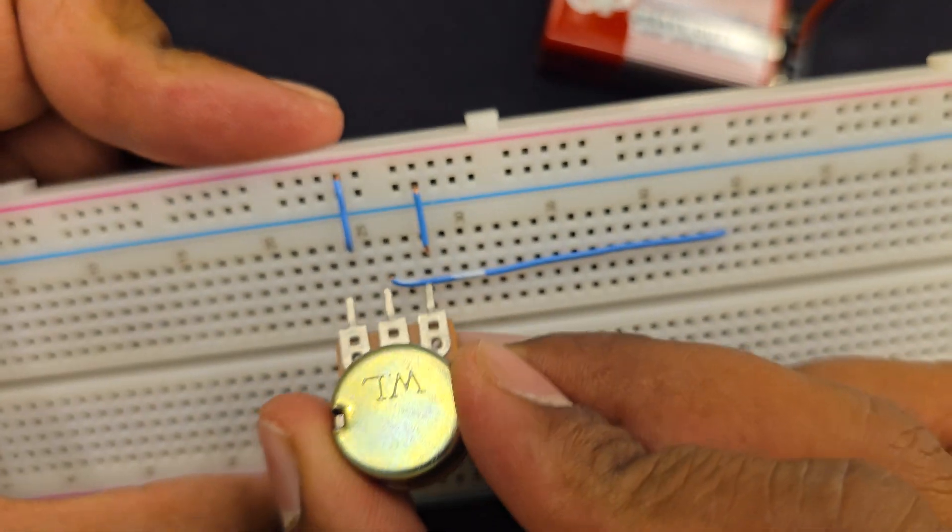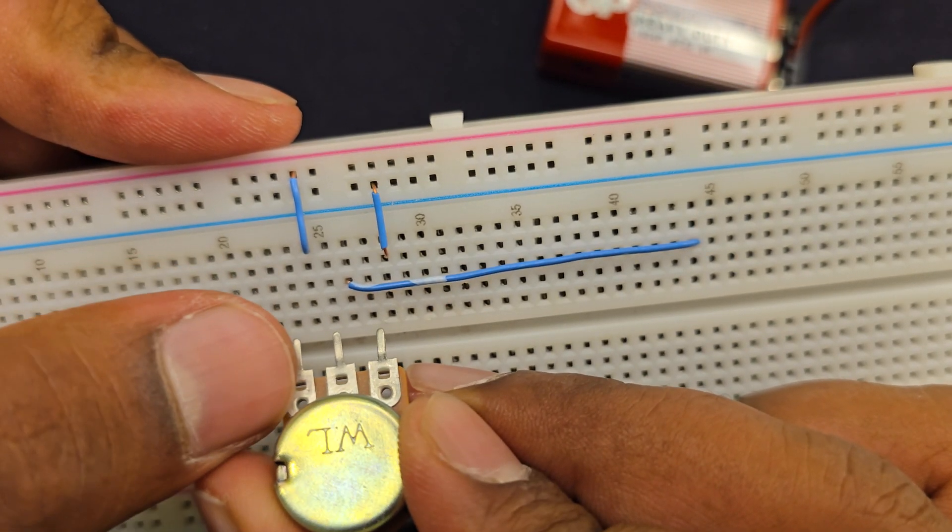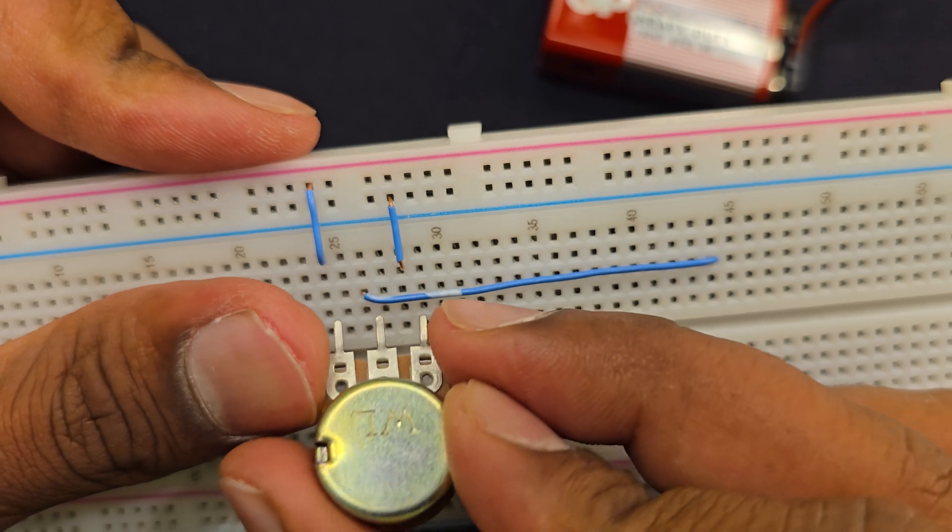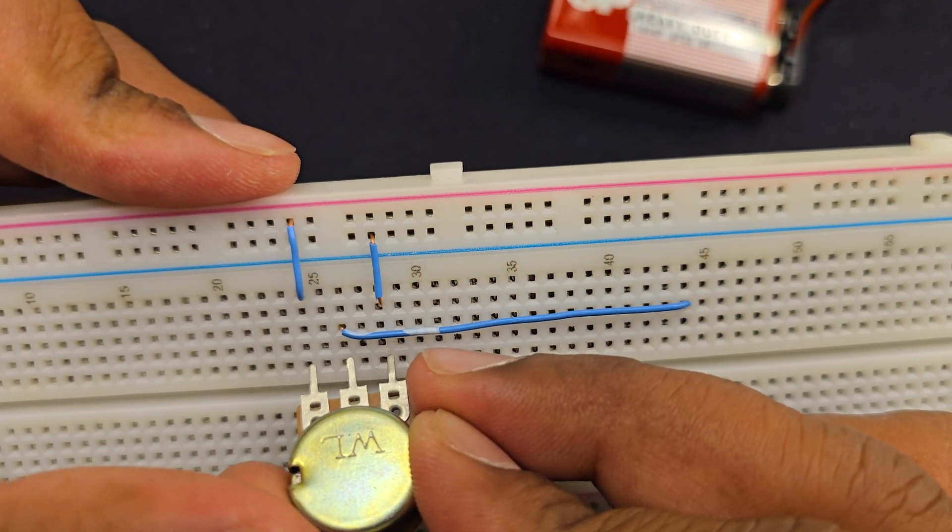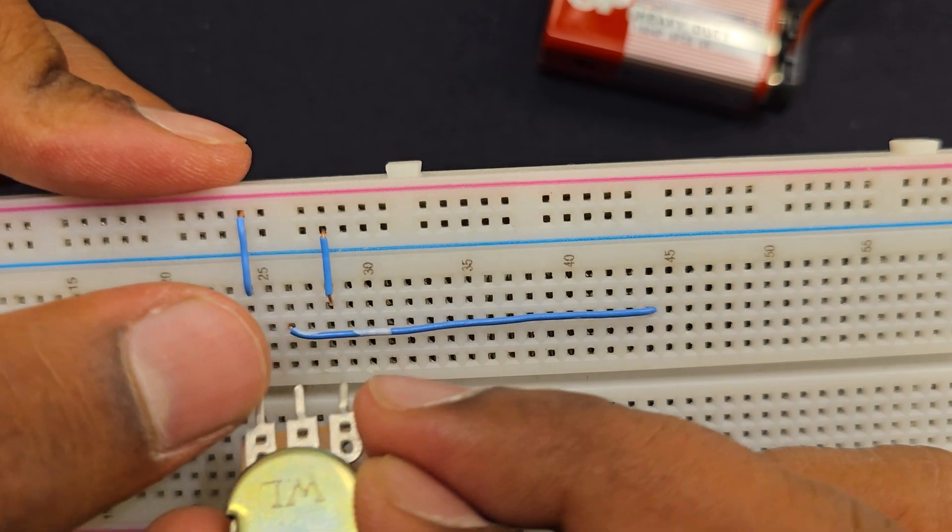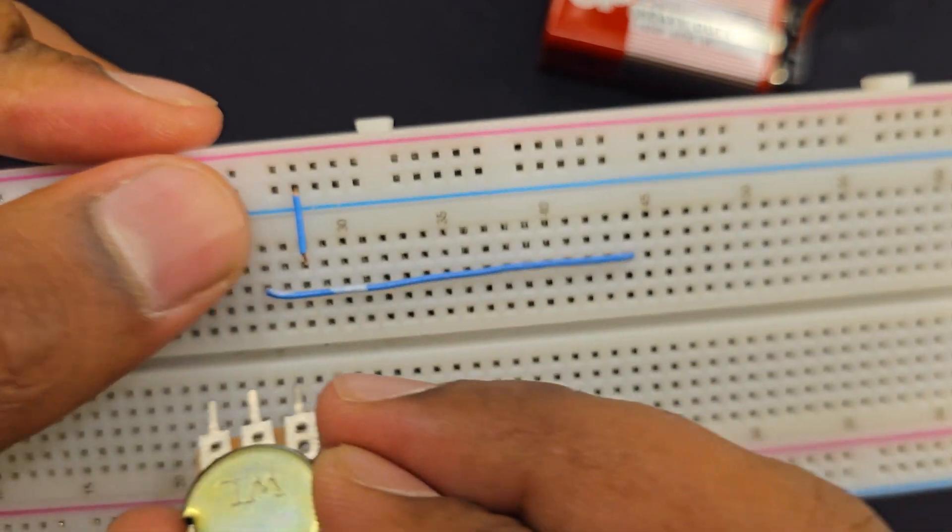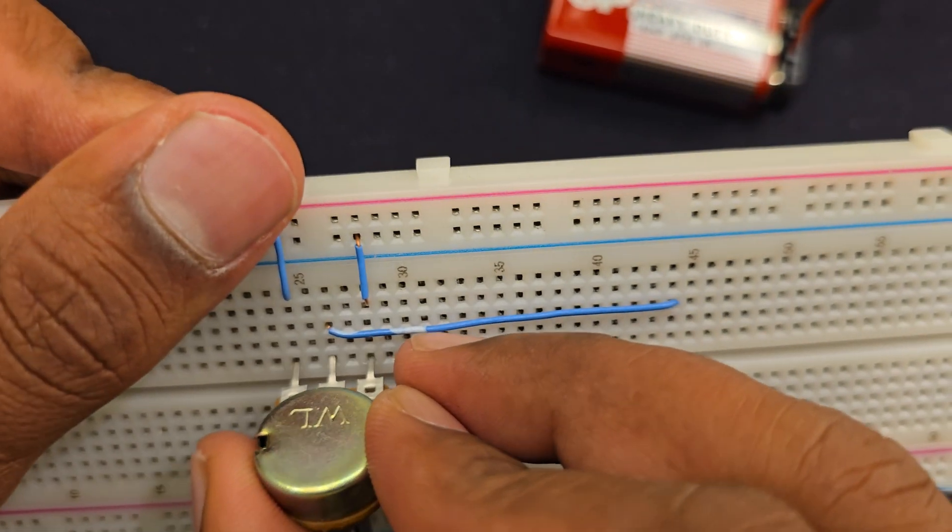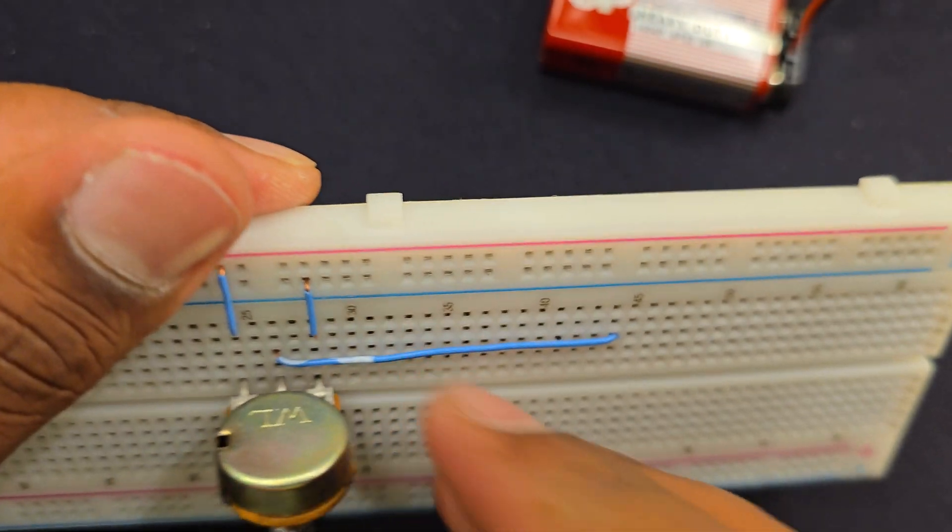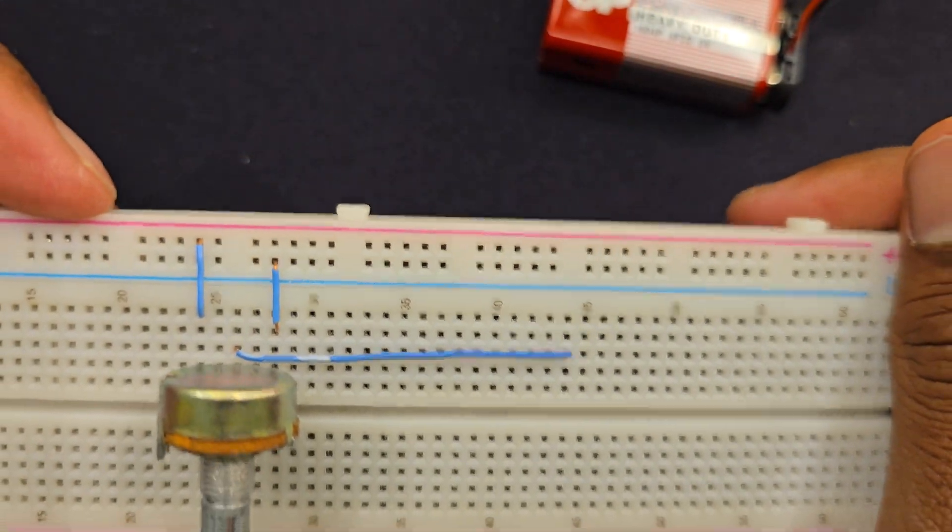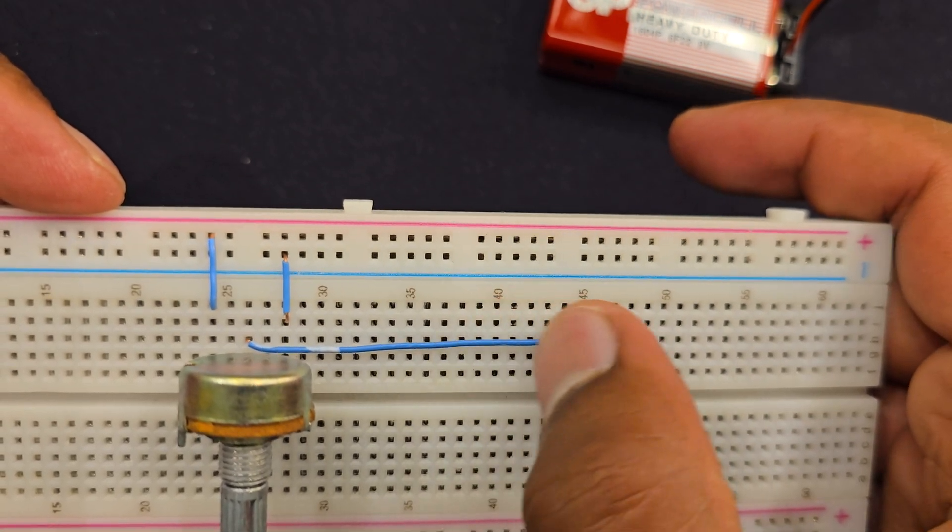So what I'm going to do is connect the left and the right pin to the positive and negative rail of the breadboard, and the middle one I use as an output. So that is the voltage divider right there. This is our output line, this one.